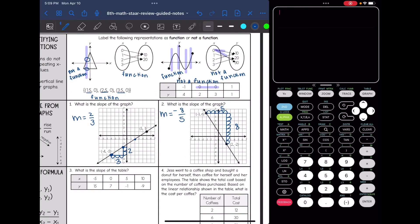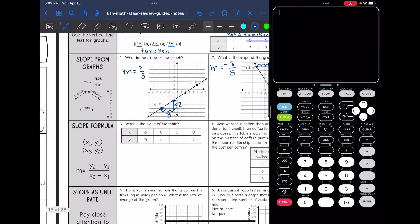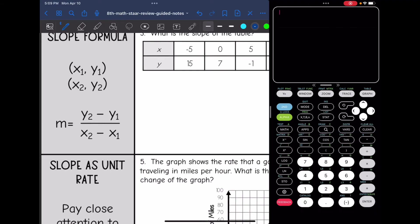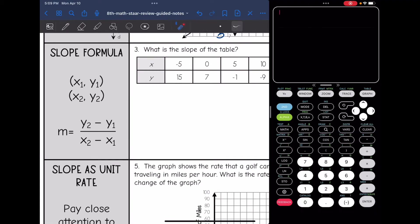So that is slope from a graph, you can do rise over run. To find the slope, you can also do slope formula between two ordered pairs. So you would want to label your points x1, y1, x2, y2, and then plug into slope formula, which is y2 minus y1 over x2 minus x1.